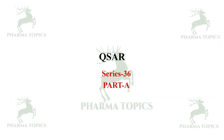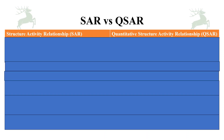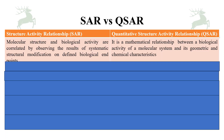SAR stands for structure-activity relationship. When you quantify it, it is called quantitative structure-activity relationship (QSAR). Molecular structure and biological activity are correlated by observing the results of systematic structural modification on defined biological endpoints — that is SAR. QSAR is a mathematical relationship between the biological activity of a molecular system and its geometric and chemical characteristics.